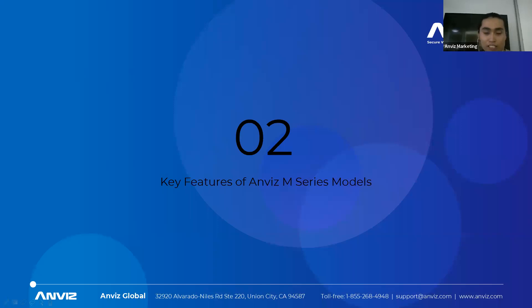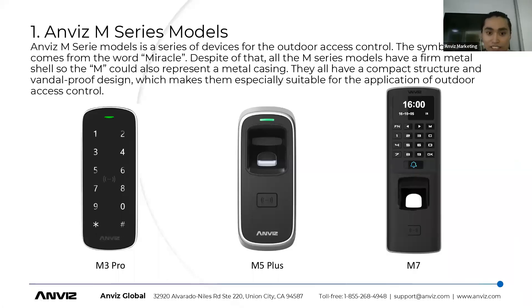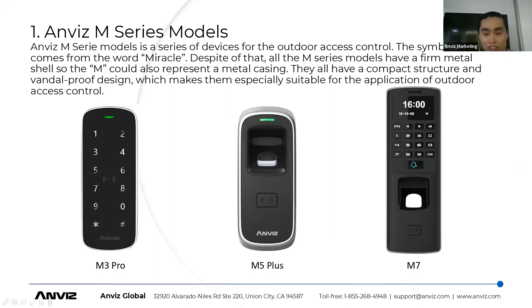Many of you may have already heard of or used our M-Series devices. As we can see in the picture, there are three major series: M3, M5, and M7. All of them have metal cases, which makes the devices more sturdy for use in outdoor access control. The symbol 'M' not only represents metal, but also stands for 'miracle theory'.